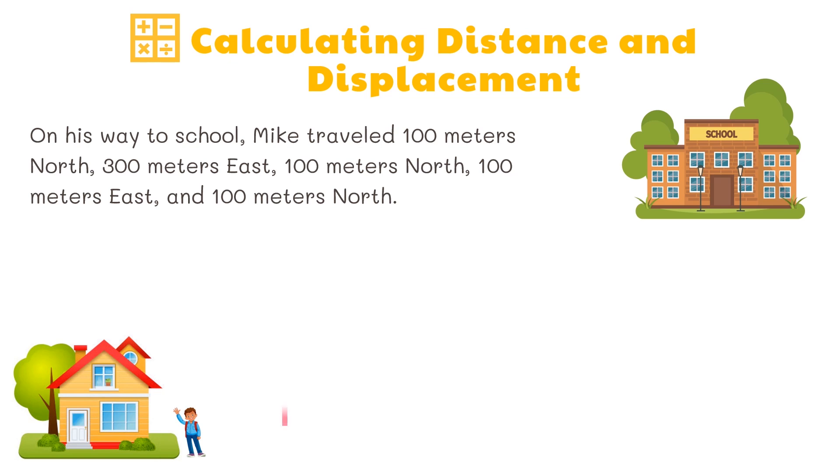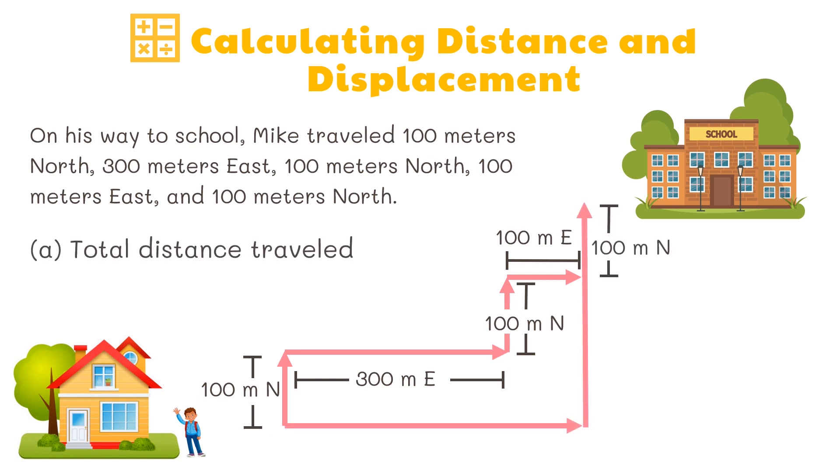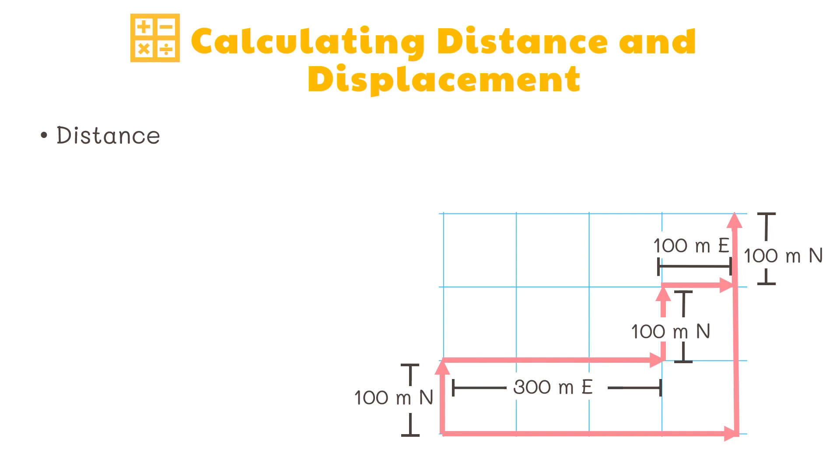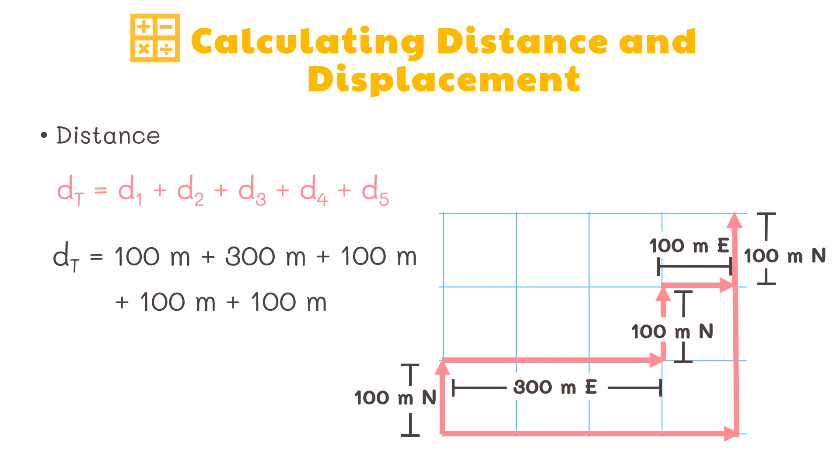Find the total distance traveled and determine the displacement made by Mike. To solve for total distance, we simply add all the given distances: we have 100 meters plus 300 meters plus 100 meters plus 100 meters plus 100 meters for a total distance of 700 meters.